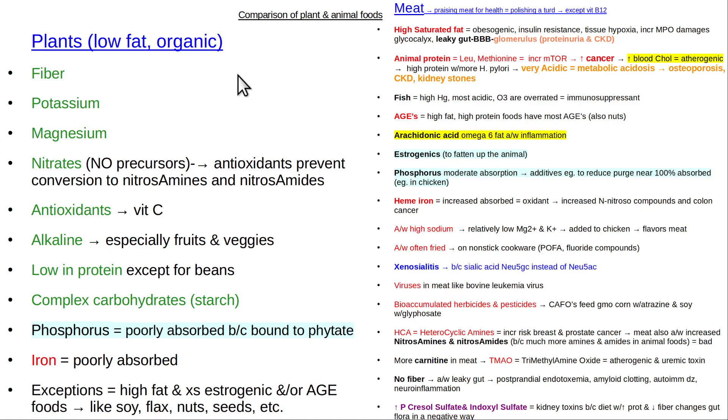First of all, plants basically contain all the good stuff. Plants contain dietary fiber. Dietary fiber protects you from leaky gut. It's also used - the good bacteria convert it into short-chain fatty acids, especially butyrate, which is used to maintain the tight junctions on the intestinal lining, the epithelium of the gut, the enteric tract, so it prevents leaky gut.